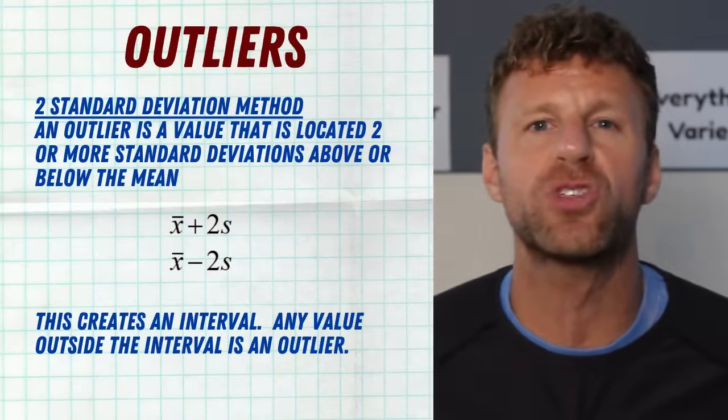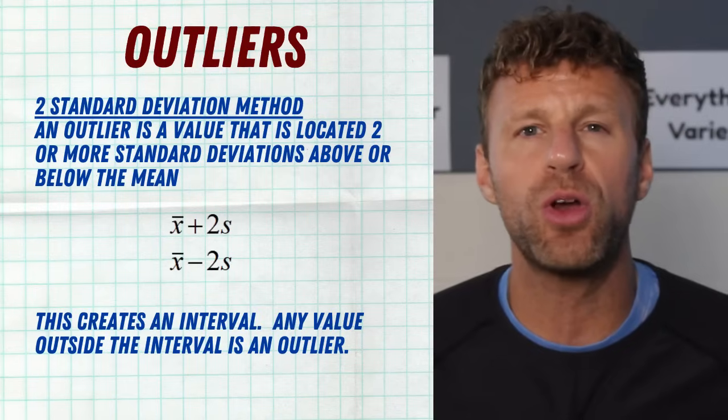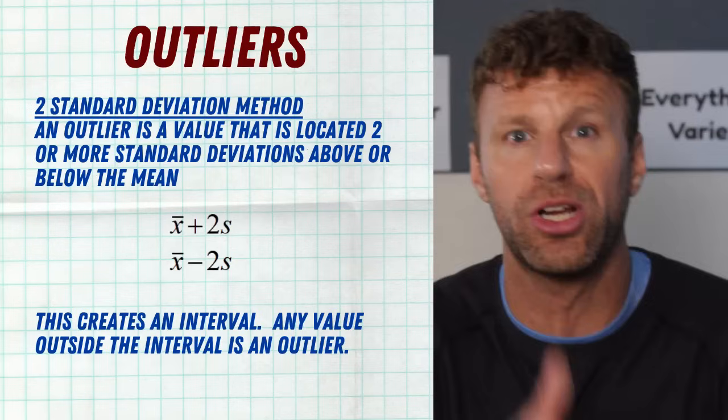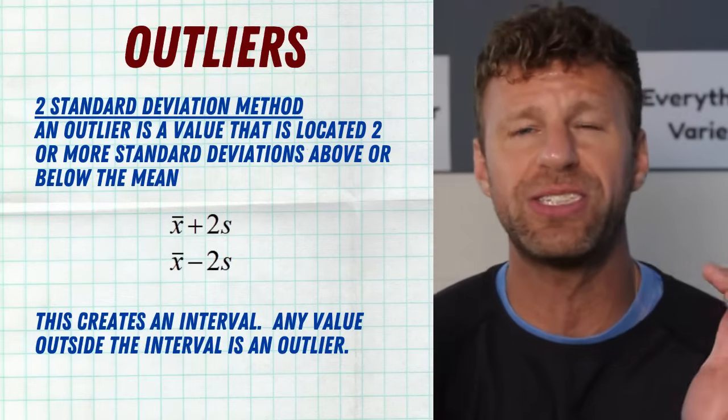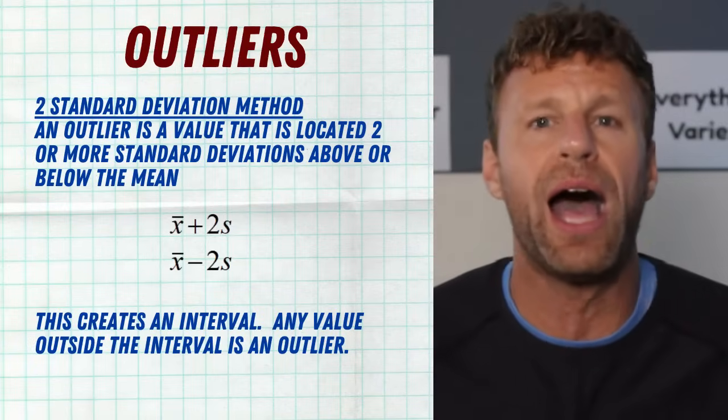The second method for identifying outliers is when you have your mean and standard deviations. If you don't know your quartiles and just know the mean and standard deviation, take your mean and add two standard deviations, then subtract two standard deviations — that creates an interval. Numbers inside that interval are fine; numbers outside that interval are deemed outliers. It is unlikely for a value to be outside of two standard deviations above or below from your mean. If you know your quartiles, the fence method is preferred; if you only know the mean and standard deviation, use the other method.